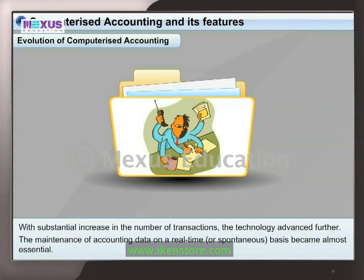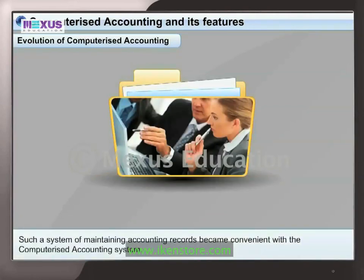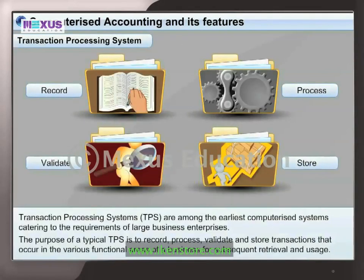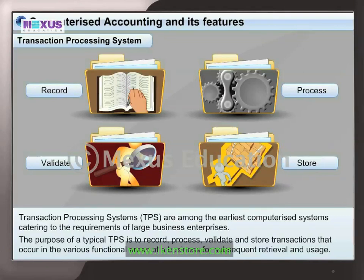Such a system of maintaining accounting records became convenient with a computerized accounting system. Transaction Processing Systems, or TPS, are among the earliest computerized systems catering to the requirements of large business enterprises. The purpose of a typical TPS is to record, process, validate, and store transactions occurring in the various functional areas of a business for subsequent retrieval and usage.